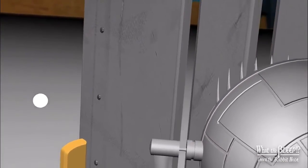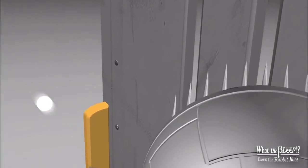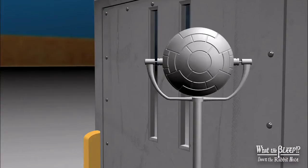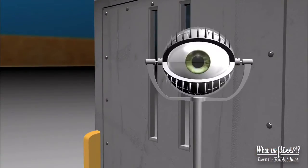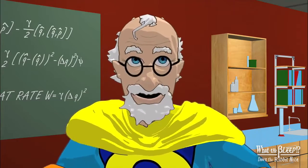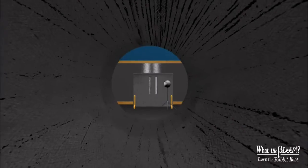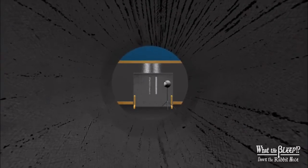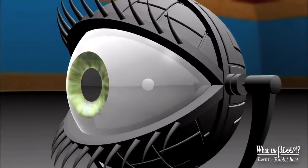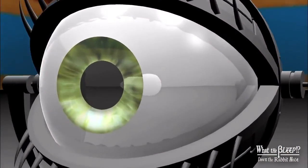When they observed, the electron went back to behaving like a little marble. It produced a pattern of two bands, not an interference pattern of many. The very act of measuring or observing which slit it went through meant it only went through one, not both. The electron decided to act differently, as though it was aware it was being watched.